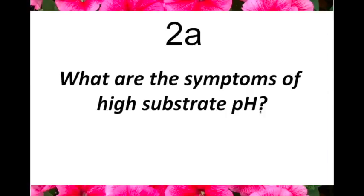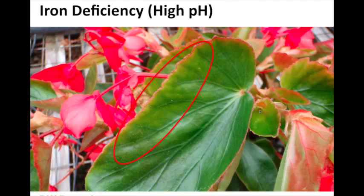So when things are not looking right, what do they look like? First, let's look at high substrate pH problems. You can go based on where the symptoms occur to help you diagnose these two problems. High pH problems — iron deficiency occurs in the upper, new foliage, whereas if the pH is too low, you get iron and manganese toxicity symptoms on the lower foliage. So that location will help you diagnose between those two problems.